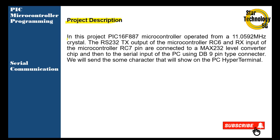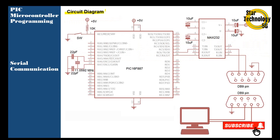Project description. In this project, the PIC16F887 microcontroller operates from an 11.0592 MHz crystal. The RS-232 TX output of the microcontroller (pin RC6) and RX input (pin RC7) are connected to a MAX232 level converter chip and then to the serial input of the PC using a DB9 pin connector. We will send some characters that will be displayed on the HyperTerminal. Here is the circuit diagram we will use in our project, with the PIC16F887 microcontroller.